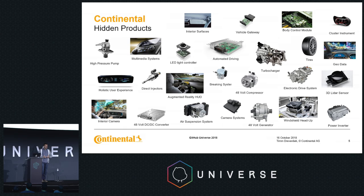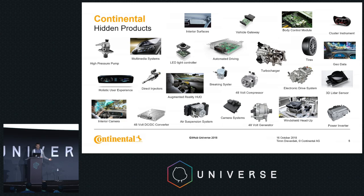I tried to get an overview of what components we manufacture for the OEM market, but after about half an hour searching internal pages I stopped — because the list would not fit even if you multiplied it by five. From us you can buy a high-pressure pump, a 48-volt generator, braking systems, and we also do automated driving and back-end services connected to all of this.